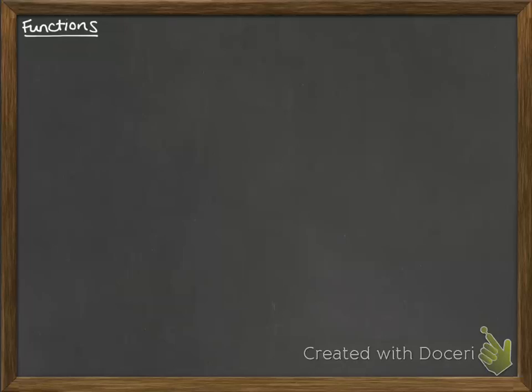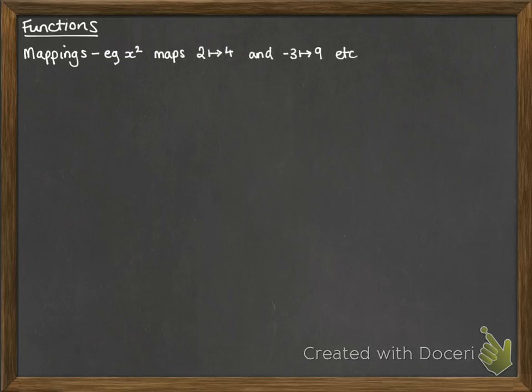Functions. Before we start talking about functions, we need to think about mappings first. Mappings are things that map one number to another. For example, x squared maps 2 to 4 and minus 3 to 9 and so on. If we were doing it in general terms, it would map x to x squared.